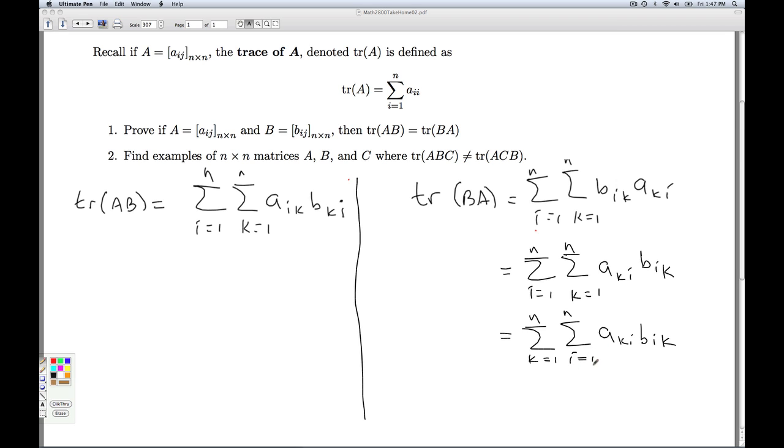Now it's just a matter of relabeling letters so everything looks the same. Remember, K and I are the indices of summation. They're dummy variables. They're like the x's when you integrate f of x dx. As long as you're consistent, you can relabel these to be whatever letters you want. So I'm going to do two relabelings. I'm going to relabel K with M, because that's a letter I haven't used yet, and I with L.